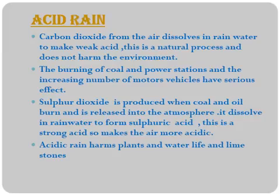Sulfur dioxide dissolves in rain water to form sulfuric acid, which is a strong acid, making the air more acidic. Acidic rain harms plant and water life and limestone. Due to high environmental pollution, acidic rain is formed. In the environment, gases like carbon dioxide and sulfur dioxide are present.